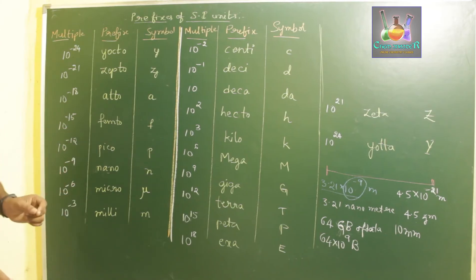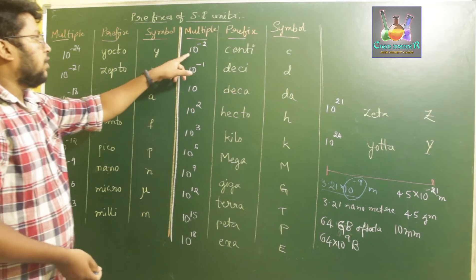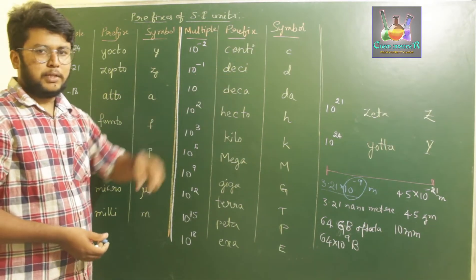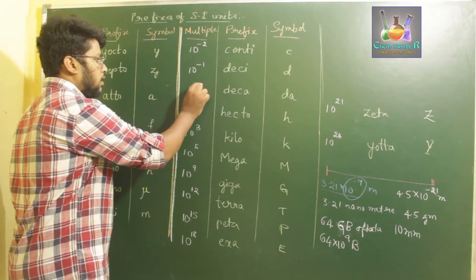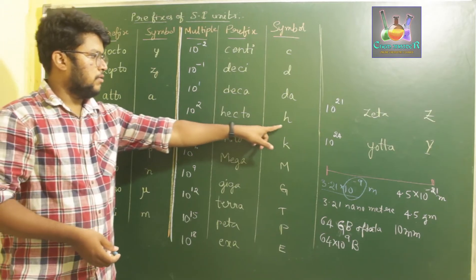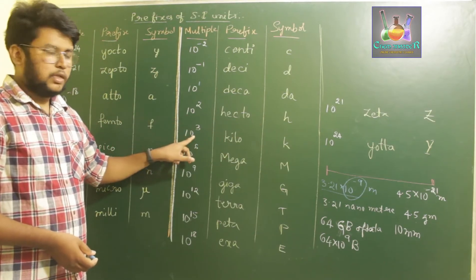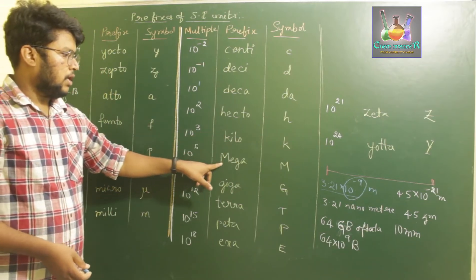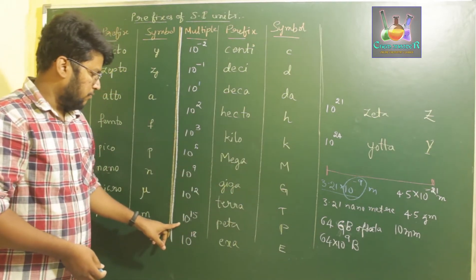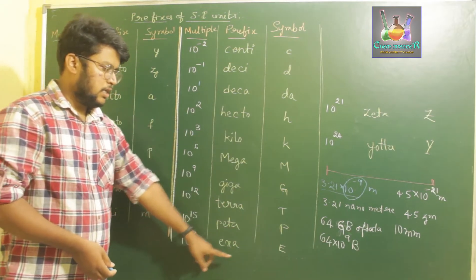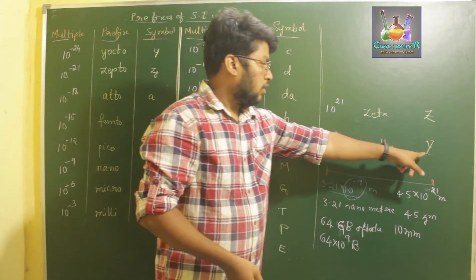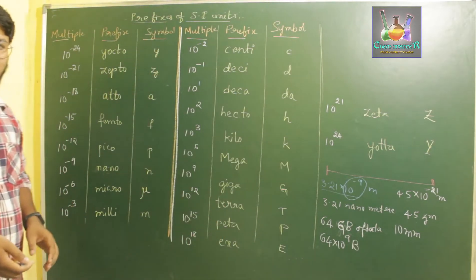If you have millimeter that means mm — two m's, one for milli and one for meter. 10⁻² is centi, symbol lowercase c. 10⁻¹ is deci, symbol d. 10¹ is deca, symbol d. 10² is hecto, symbol h. 10³ is kilo, symbol k. 10⁶ is mega, symbol capital M. 10⁹ is giga, symbol G. 10¹² is tera, symbol T. 10¹⁵ is peta, symbol P. 10¹⁸ is exa, symbol E. 10²¹ is zetta, symbol capital Z. And 10²⁴ is yotta, symbol capital Y.